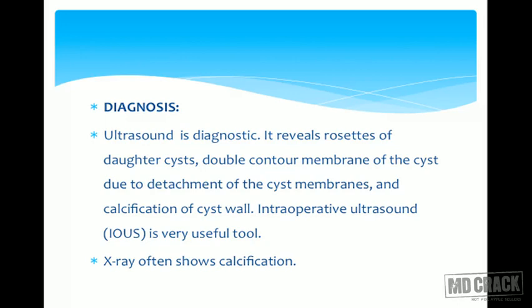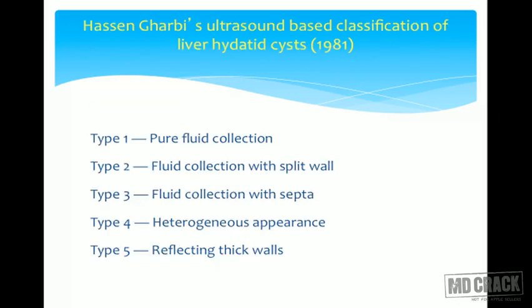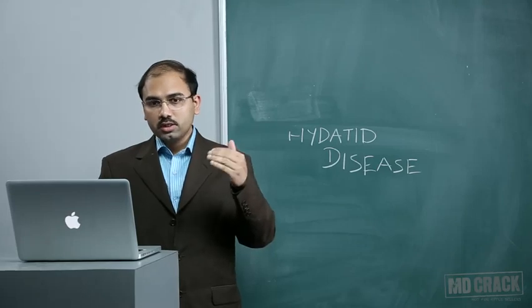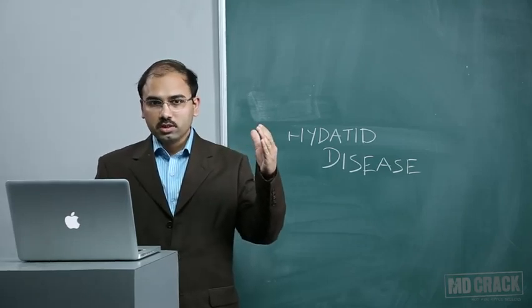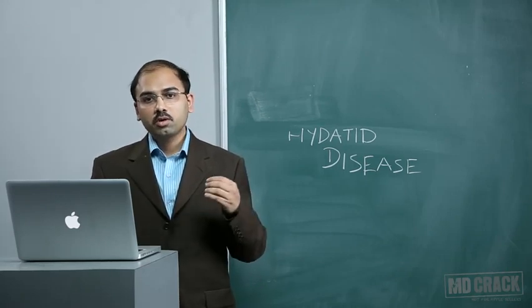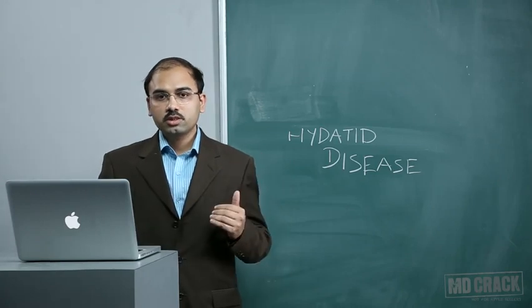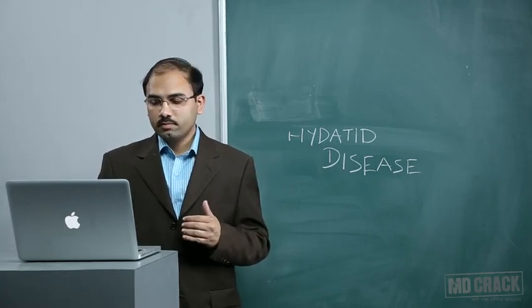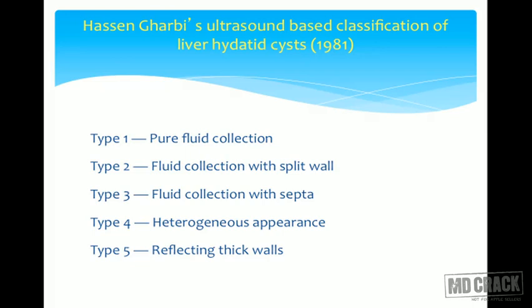Intraoperative ultrasound can also be very helpful during surgery, and X-ray will often show calcification. The Hassan Garbi ultrasound-based classification of liver hydatid cysts: Type 1 is pure fluid collection; Type 2 is fluid collection with split wall; Type 3 is fluid collection with septa; Type 4 is heterogeneous appearance; and Type 5 is reflecting thick walls. Earlier types are easier to treat, and as classification increases, treatment becomes more difficult.